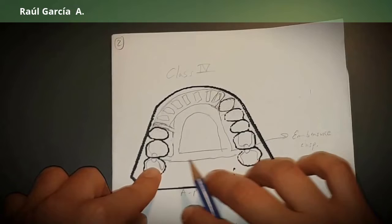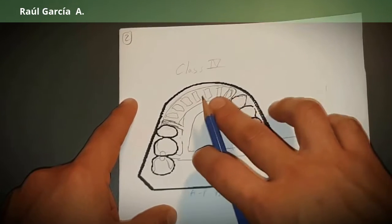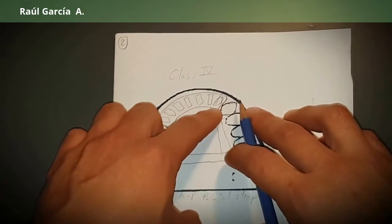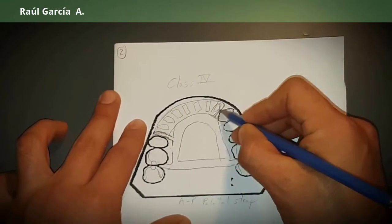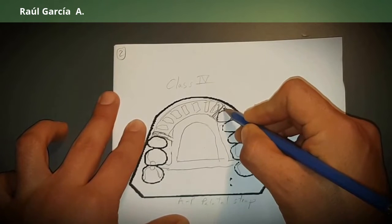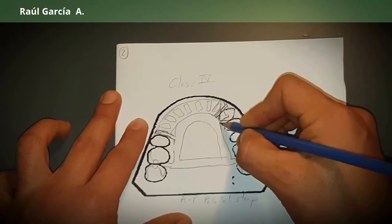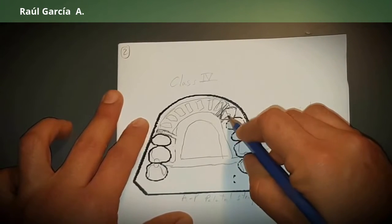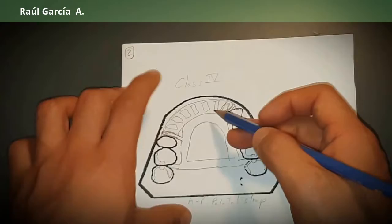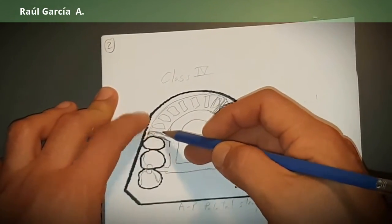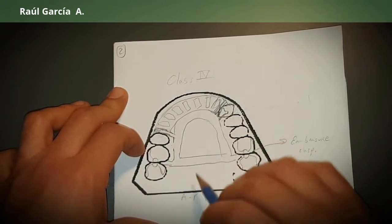Again, we can use our embrasure clasps. In this case you can put either a clasp here or just your guide plate and your rest would do. But what happens in this case where you lost your canine? Next to the saddle area, guide plate, this is my guiding plane. We use the same anterior-posterior palatal strap.